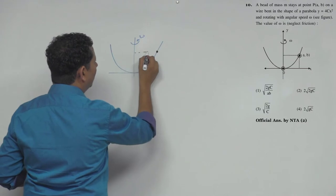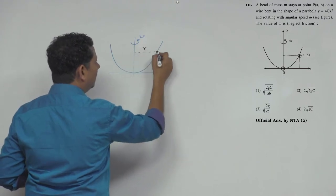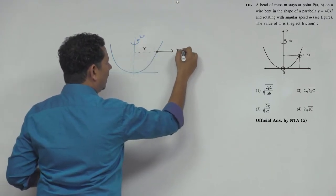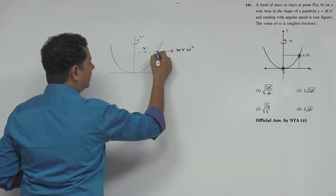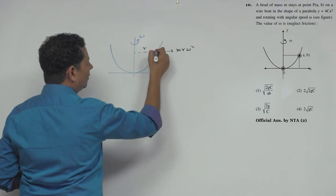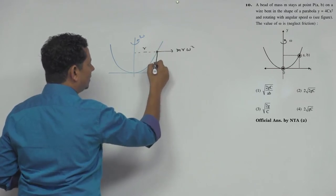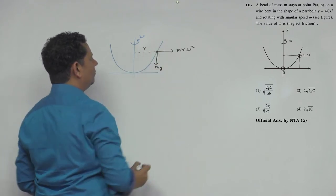If we look at this bead, suppose its distance is r, then there is a centrifugal force mr ω² acting on it in the rotating frame. And below, the gravitational force mg is acting.